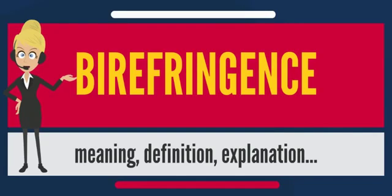In addition to anisotropy in the electric polarizability and electric susceptibility, anisotropy in the magnetic polarizability and magnetic permeability can also cause birefringence.